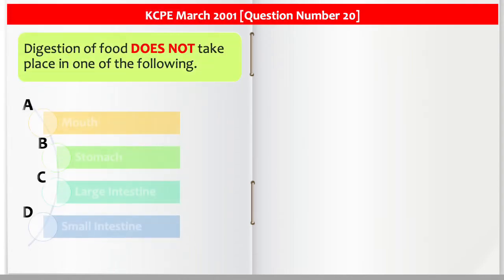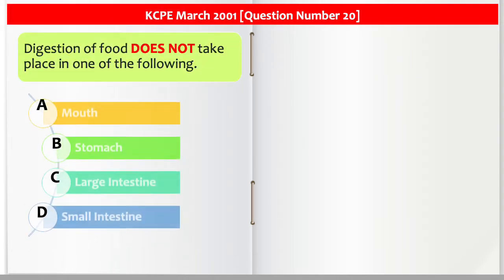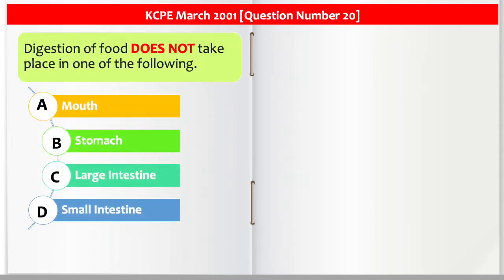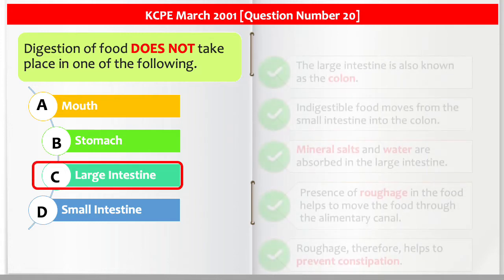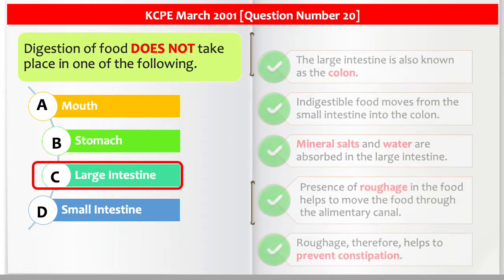Digestion of food does not take place in one of the following: A. Mouth, B. Stomach, C. Large intestine, and D. Small intestine. The answer is the large intestine.